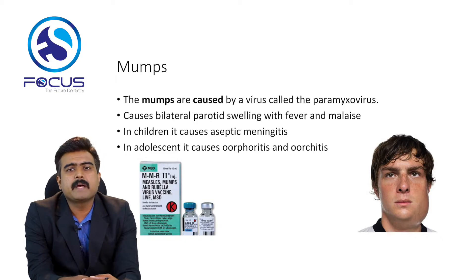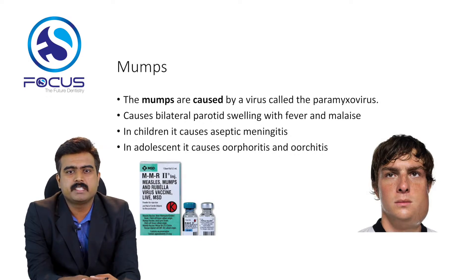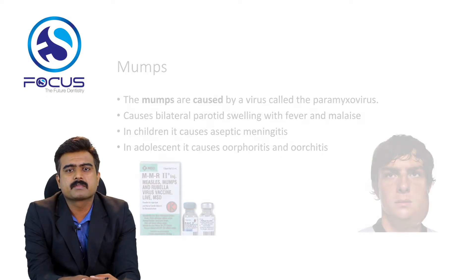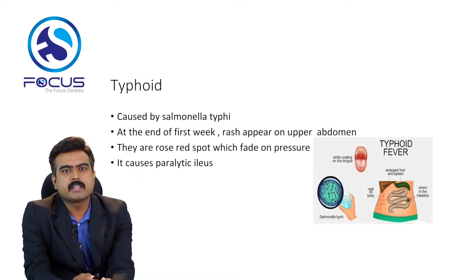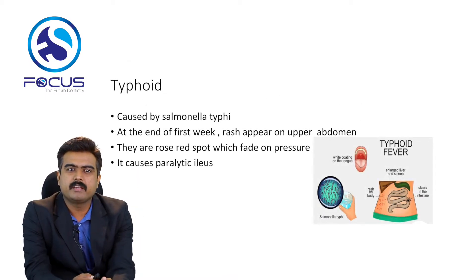The next one is mumps, also caused by paramyxovirus. It causes bilateral parotid swelling with fever and malaise. In children it causes aseptic meningitis, and in adolescents it causes oophoritis and orchitis.